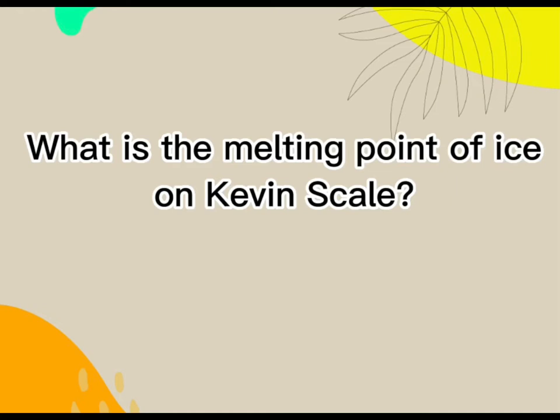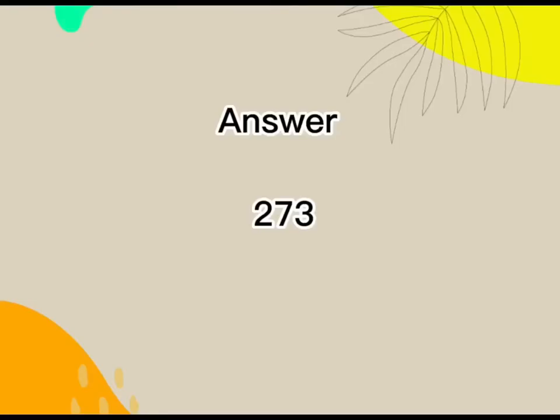What is the melting point of ice on the Kelvin scale? Answer: 273.